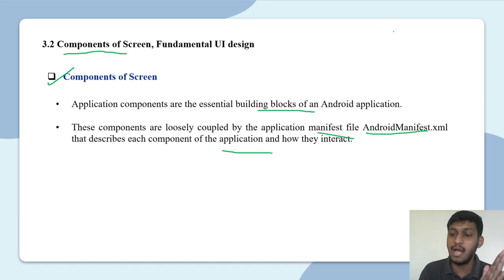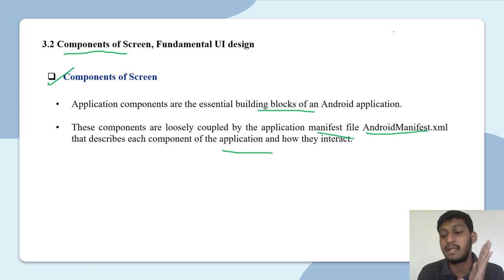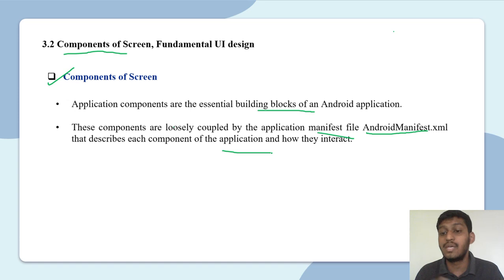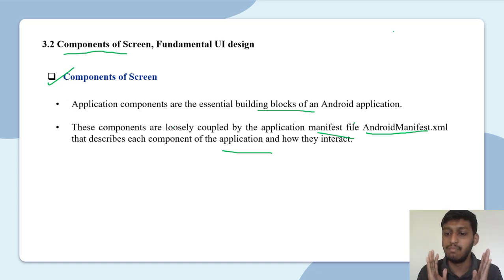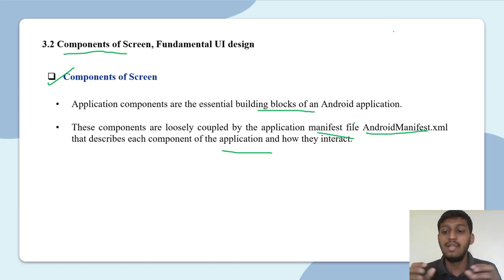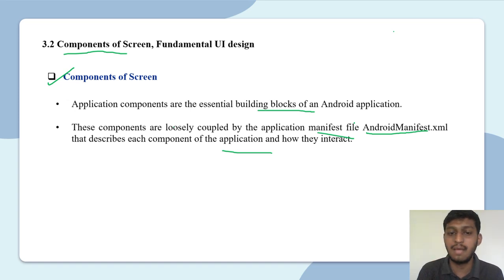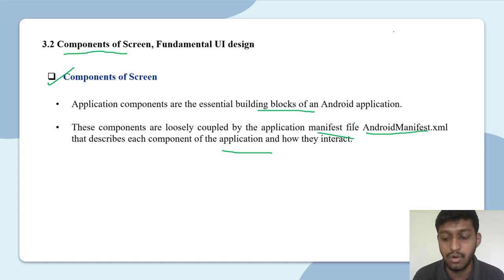The manifest tells us how components in our application will communicate — for example, after login, should the next activity open or the home screen display? If we click on Change Password, then the change password screen should open. This file defines how activities interact with each other. That is AndroidManifest.xml — every component is a building block, linked together, and the manifest describes how the application will interact.